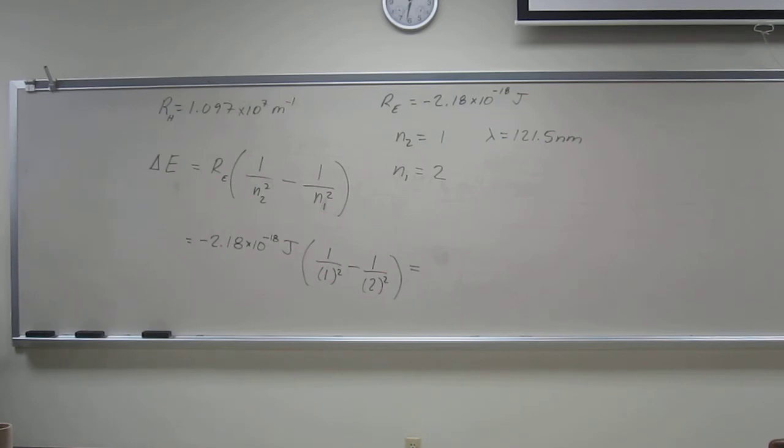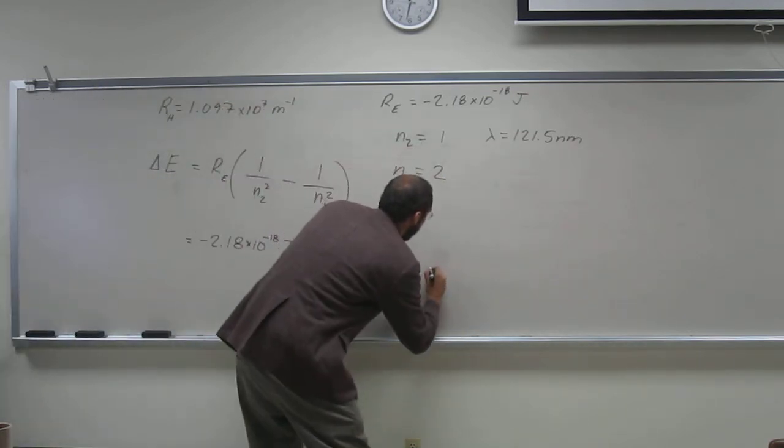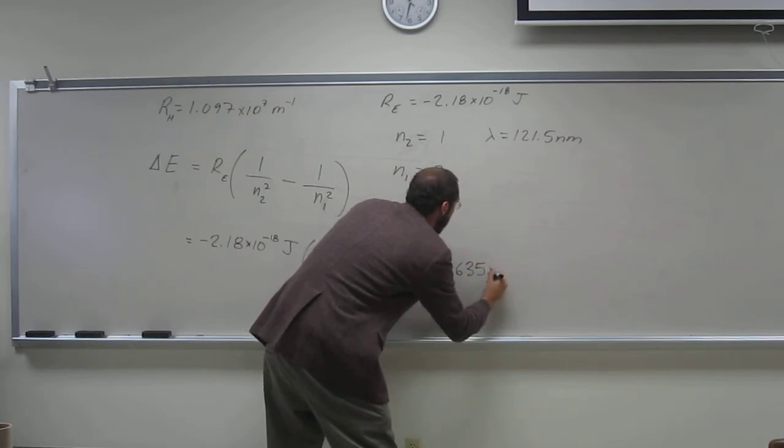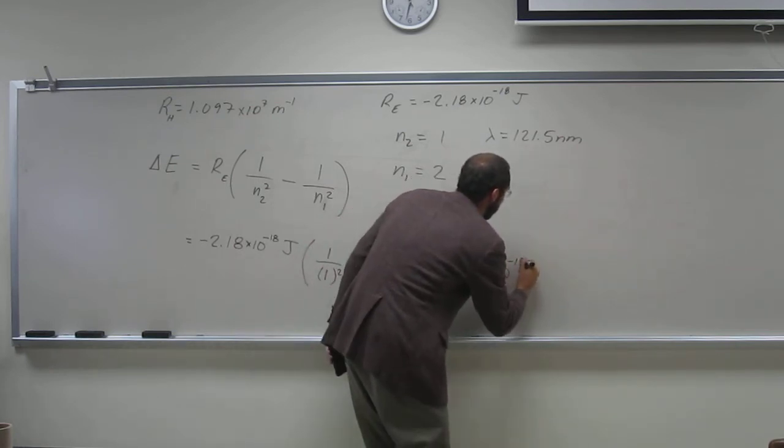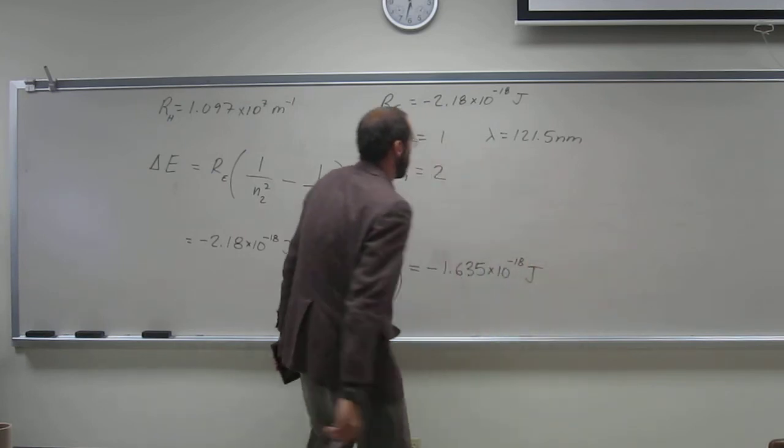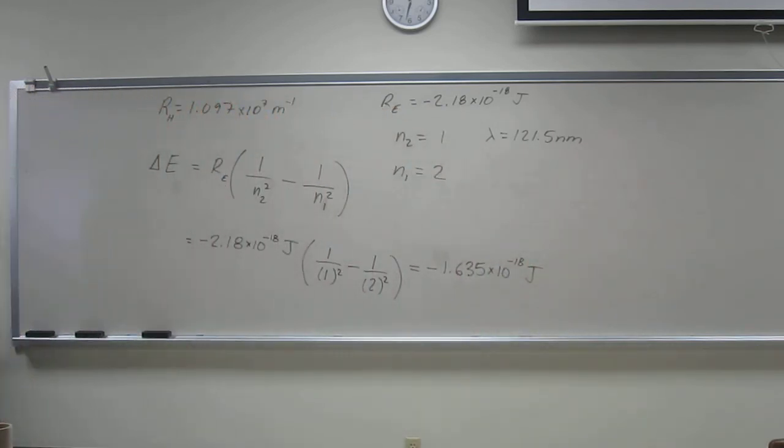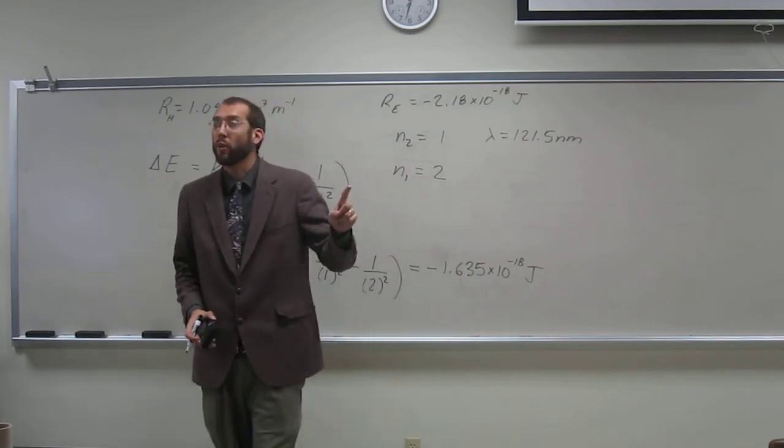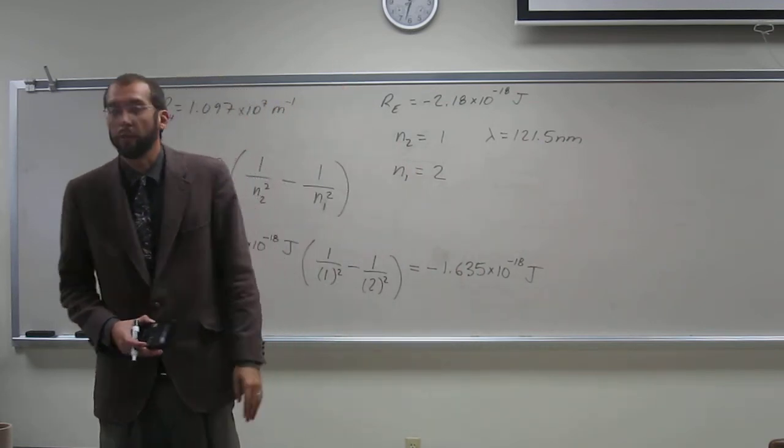So it's just negative 2.1B. And you should get something like negative 1.635 times 10 to the negative 18 joules. It's a very small number, like you would expect to get. Why would you expect this to be a small number? Because it's one electron going from one energy level to another energy level.